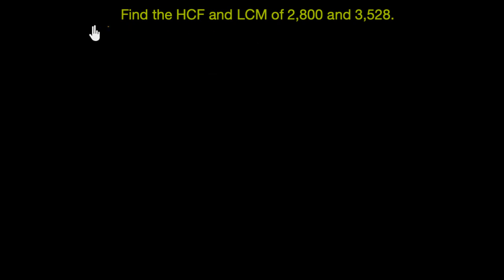So let's start by prime factorizing 2,800 first. The process of finding their HCF and LCM would exactly be the same as finding the HCF and LCM of two smaller numbers, how we used to do that using prime factorization. So you can just pause the video here and try that on your own. As of now, let's start by prime factorizing 2,800.